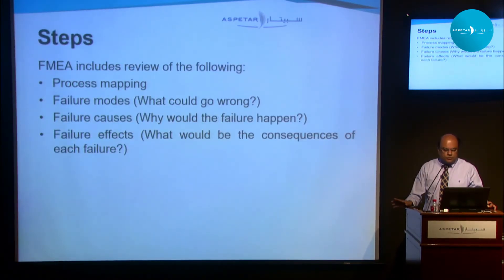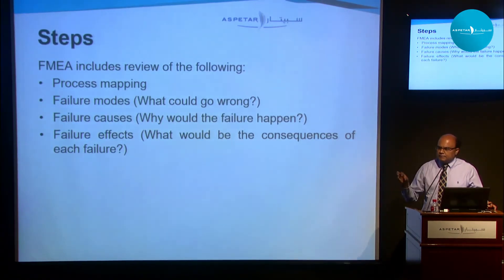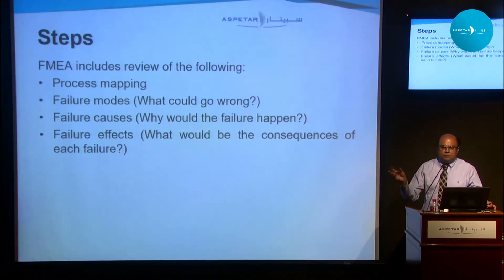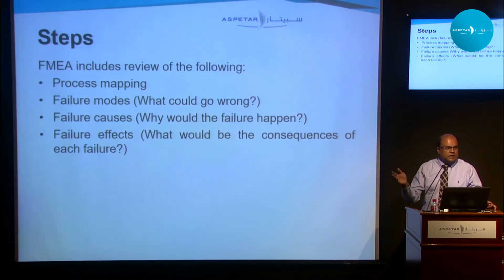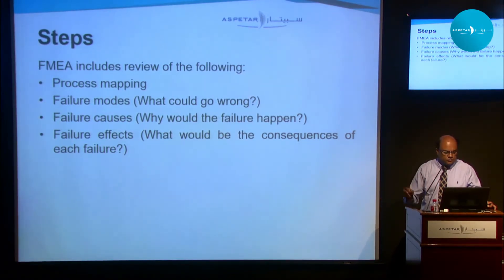There are four steps to conducting an FMEA. The first step is to map the process end-to-end from start to finish, which requires input from the multi-disciplinary team. Then look at which steps could go wrong — the failure modes. For each failure mode, look at the causes that might trigger that failure. Finally, look at the failure effects — what would be the consequences of each failure step.